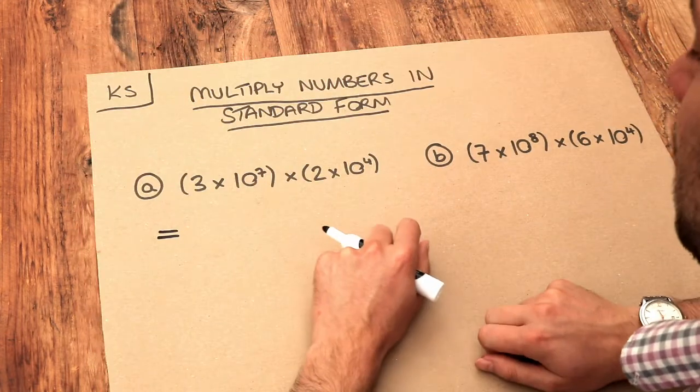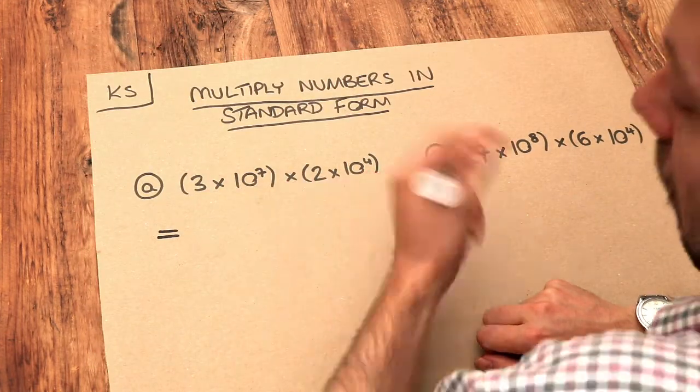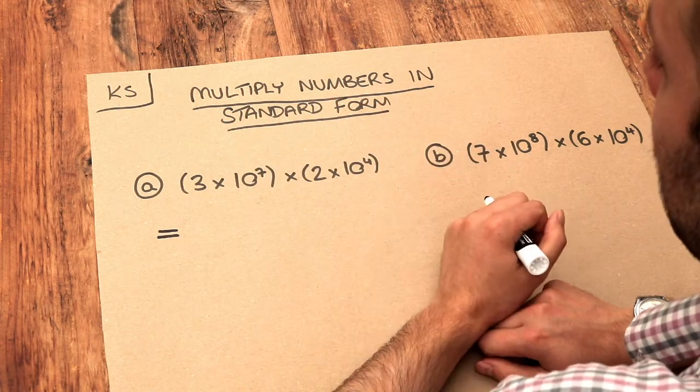Now the easiest way to deal with this is to think this is just a multiplication of four things and we can multiply them in whatever order we like.